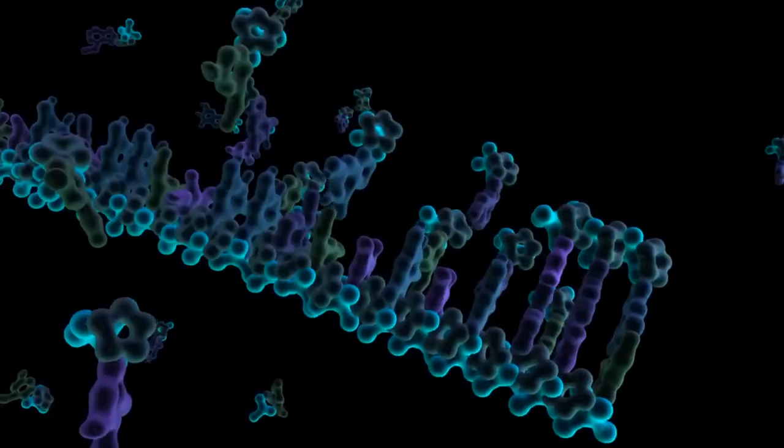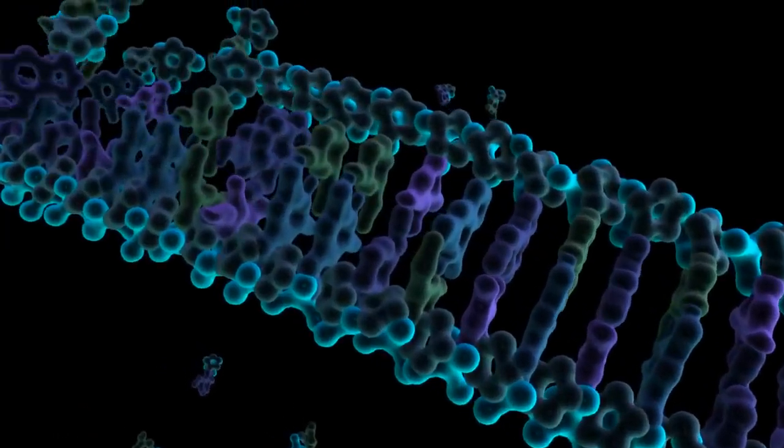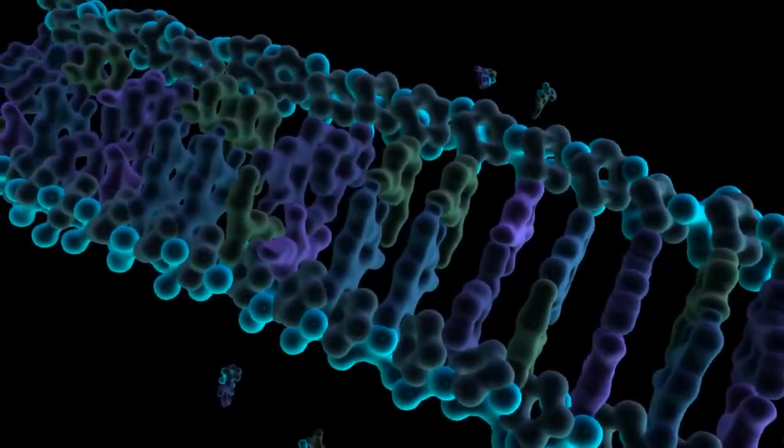Just as English letters convey a particular message depending on their arrangement, the sequences of chemical bases along the spine of the DNA molecule convey precise instructions for building proteins.